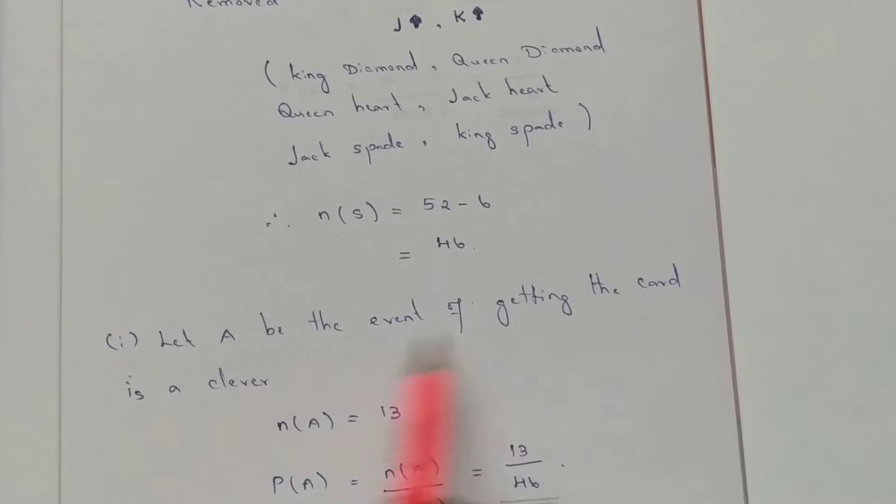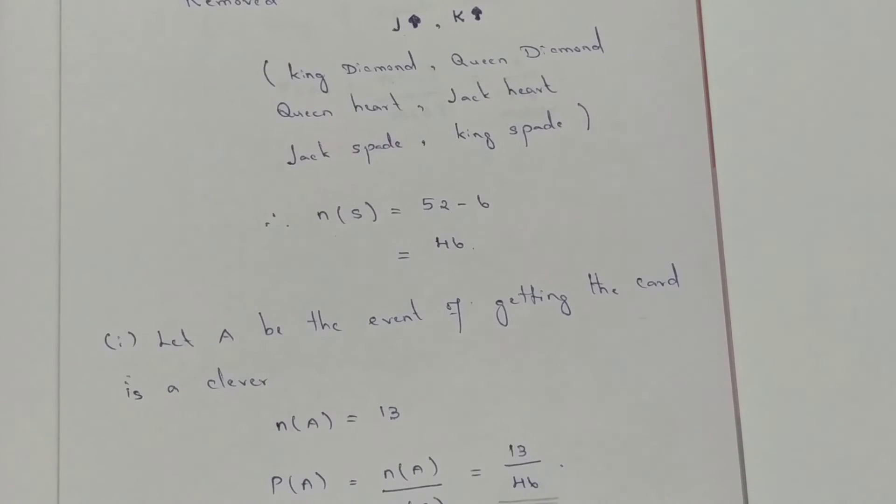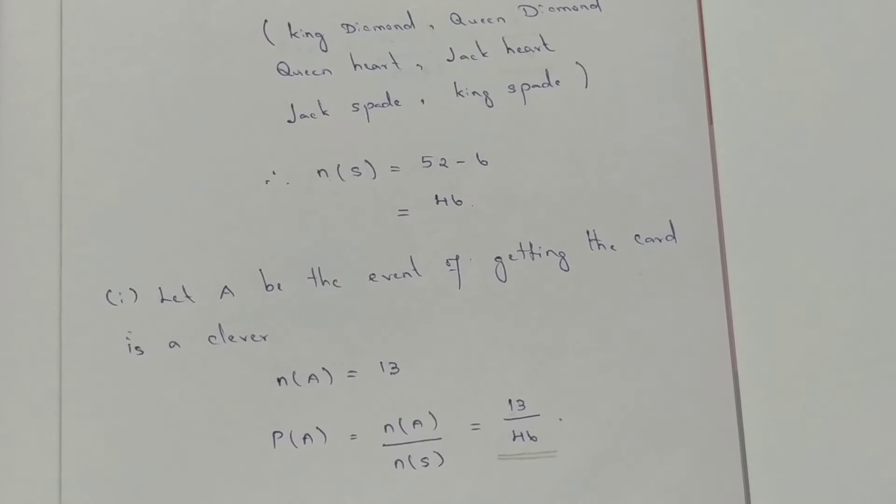Let A be the event of getting the card as a Club. Clubs are not removed, so n(A) is 13. P(A) equals n(A) divided by n(S), that is 13 by 46. n(S) is 46 because 52 minus 6 cards were removed.